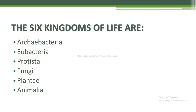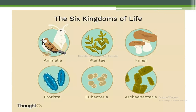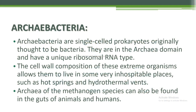Next I am going to discuss further about the six kingdoms of life: Archaebacteria, Eubacteria, Protista, Fungi, Plantae, and Animalia — as shown in the figure. First of all, I will discuss Archaebacteria. Archaebacteria are single-celled prokaryotes originally thought to be bacteria. They are in the Archaea domain and have a unique ribosomal RNA type.